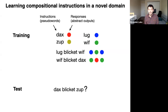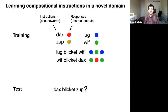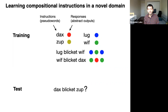We created a mini-SCAN dataset where the instructions were pseudo-words. DAX is a primitive mapped to a red action; the abstract outputs are just colored circles. So DAX is red, ZUP is yellow, LUG is blue, WIF is green. There are also complex commands like LUG-BLICKET-WIF, which produces blue, green, blue, and WIF-BLICKET-DAX, which produces green, red, green. At test time, participants were asked to generalize to new commands like DAX-BLICKET-ZUP.